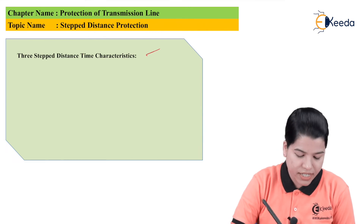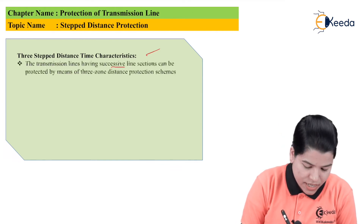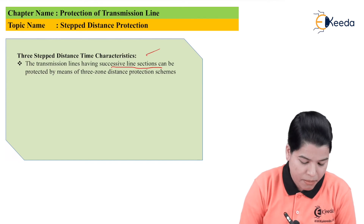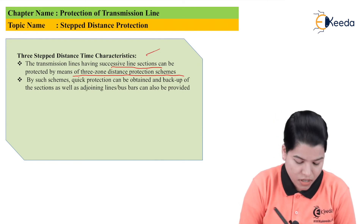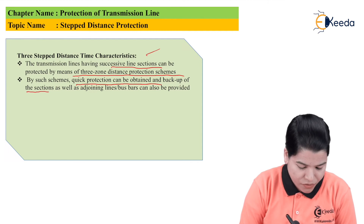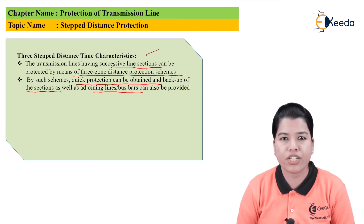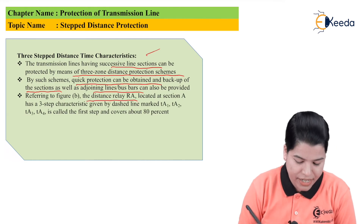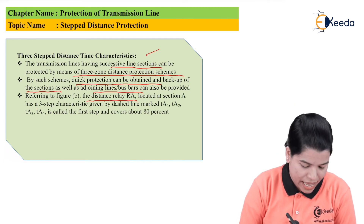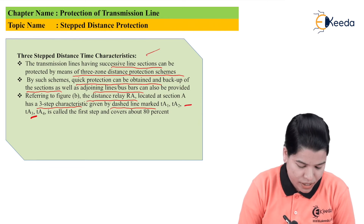Now let us study the three-step distance-time characteristic. Transmission lines with successive line sections can be protected by a three-zone distance protection scheme. This type of scheme provides quick protection and also provides backup for adjoining lines and bus bars, so both primary and backup protection can be provided. Referring to the figure, the distance relay RA located at station A has a three-step characteristic given by the dashed lines marked TA1, TA2, TA3, and TA4.